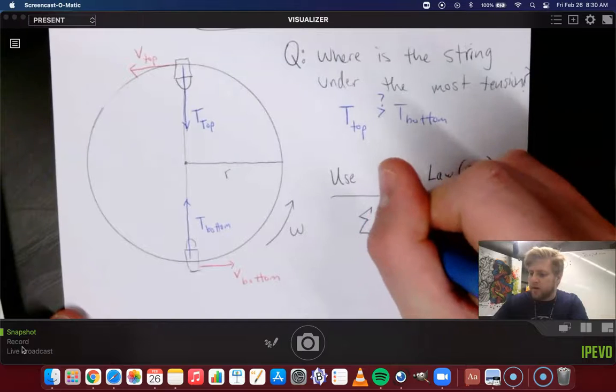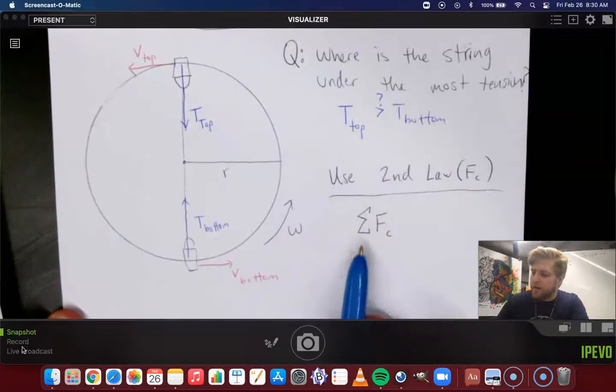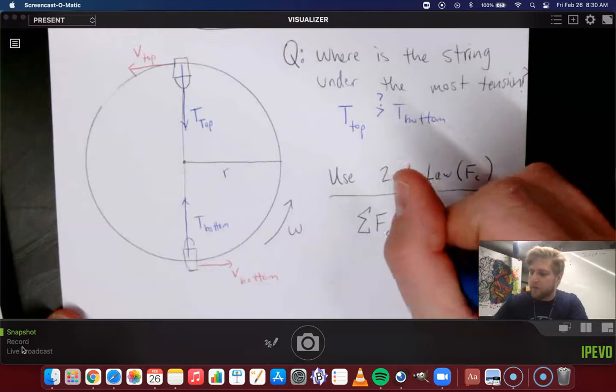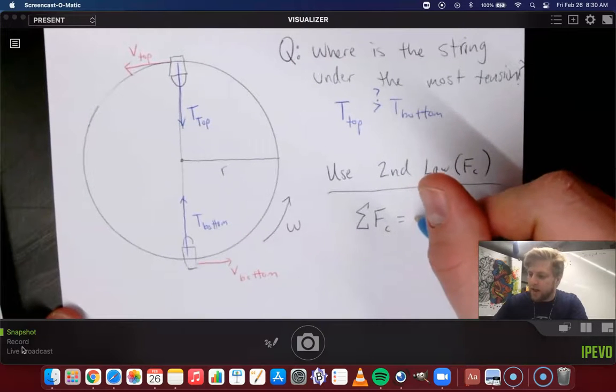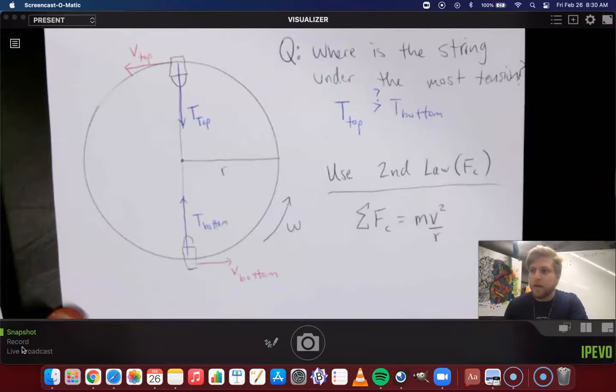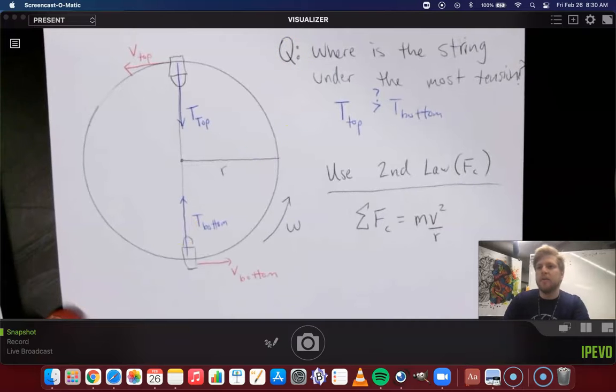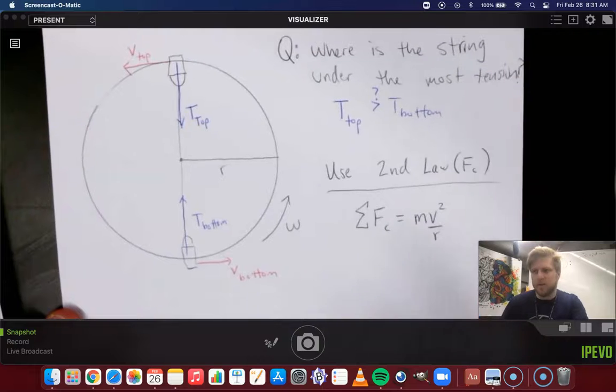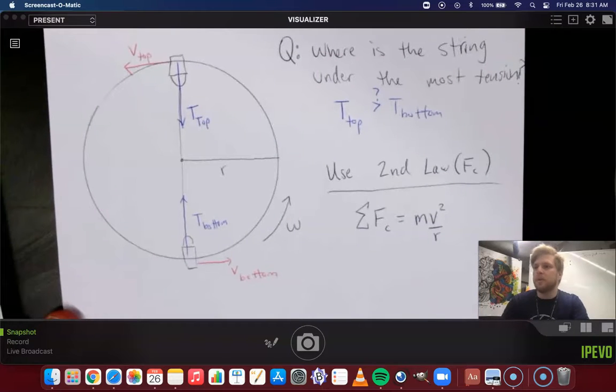But now we're going to use our special version where we're talking about centripetal force. So remember, we're going to start using a slightly different symbol. This is the sum of the forces keeping something in a circle, or in other words, the centripetal force on something is mv² over r. You can also write that as m omega squared r, but for right now, we're going to just go with this orientation. It's a little bit easier perhaps to work with.